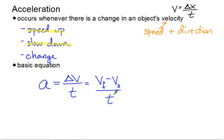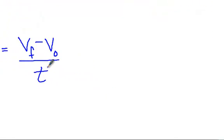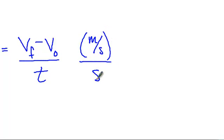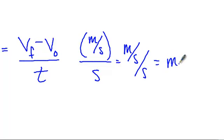Let's think about the units here. Velocity units are some distance over time — in basic metric units, meters per second. We measure time in seconds, so we get a unit for acceleration of meters per second per second, which we write as meters per second squared. Sometimes you'll see kilometers per hour per second, if velocity is measured in kilometers per hour and its rate of change is per second. Acceleration tells us how many meters per second the speed changes every second.